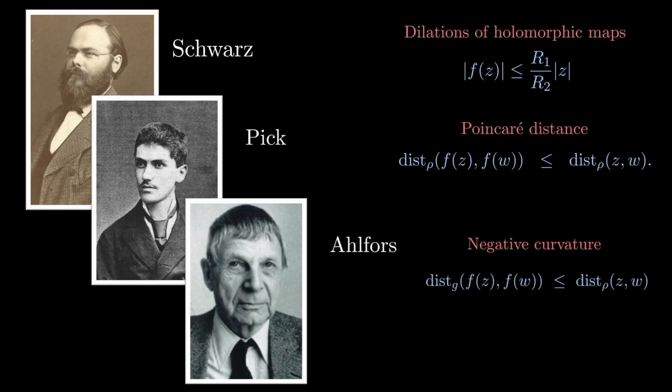So here we see this three-fold rift or division. The original formulation by Schwarz is that a holomorphic map is constrained in the extent to which it can be distorted.